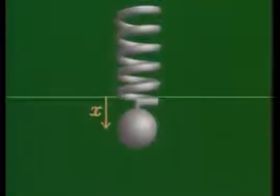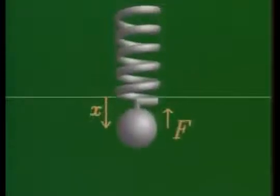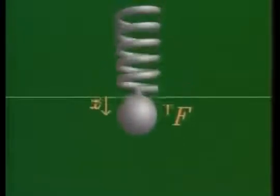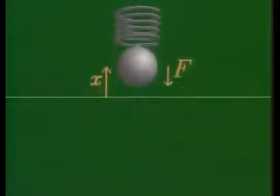En cada punto de su movimiento, la fuerza neta es proporcional y de dirección opuesta a la distancia X desde la posición de equilibrio a la masa. La ecuación es F igual a menos KX, donde el valor de K depende de la rigidez del muelle.